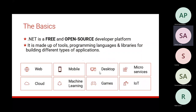.NET is a free and open source developer platform made up of tools, programming languages, and libraries for building many types of applications. This was not always the case — when Microsoft introduced the .NET Framework back in 2002, it was proprietary, closed source, and confined to the Windows platform. Over the years they made it open source and completely free, meaning no fee or licensing cost including for commercial use, with a strong community of contributors from more than three to four thousand companies and a huge ecosystem of third-party component developers.